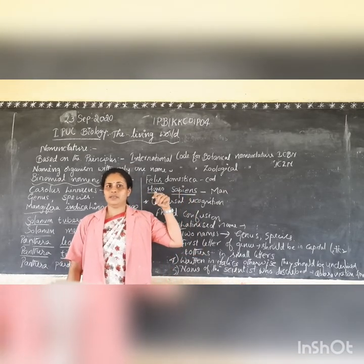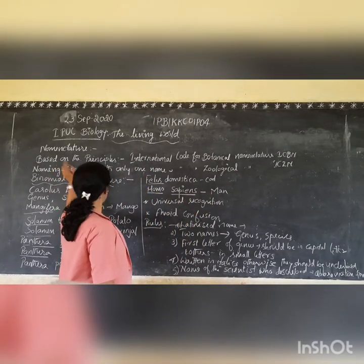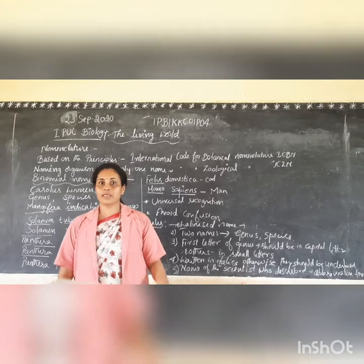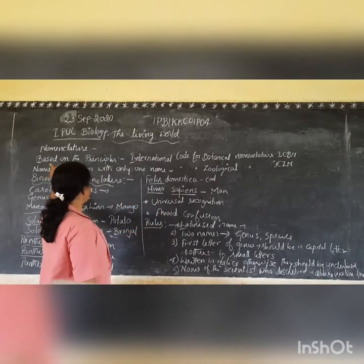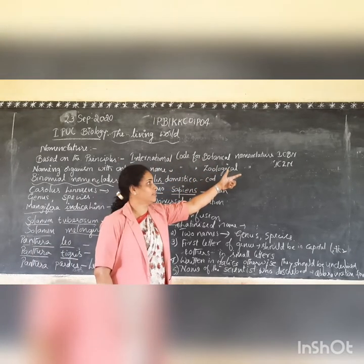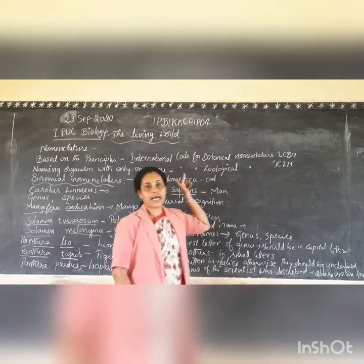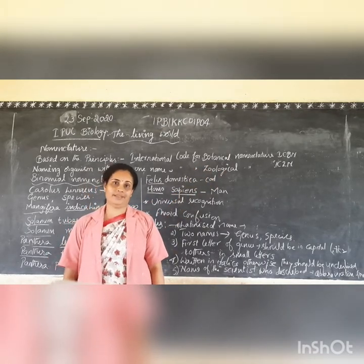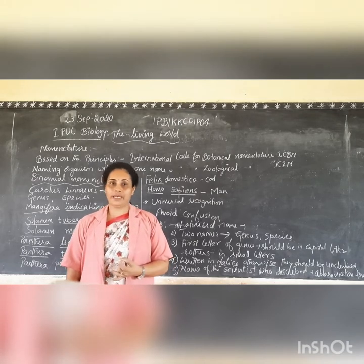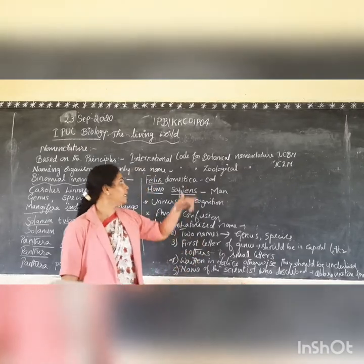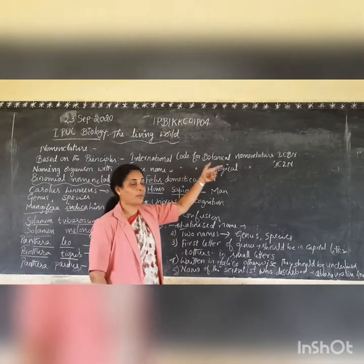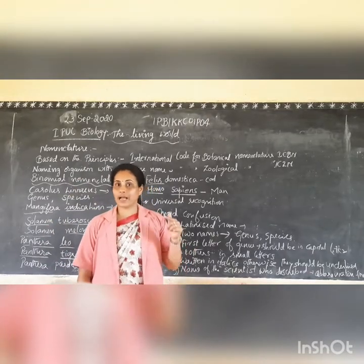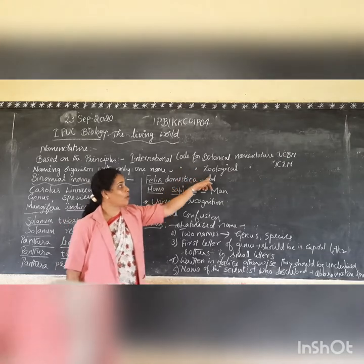So here, naming of organisms follows some principles or criteria. Plants or animals are given a particular name. For plants, the naming body is called the International Code for Botanical Nomenclature, abbreviated as ICBN, where plants are named using the scientific method — binomial nomenclature. For animals, the committee is called the International Code for Zoological Nomenclature, abbreviated as ICZN.